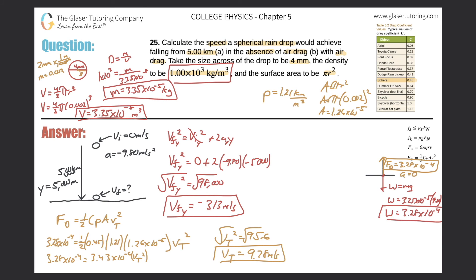Going back to the question — the raindrop won't exceed 9.78 m/s. Compare that to part (a): without air resistance the velocity would be 313 m/s, nearly a thousand kilometers per hour — nobody would go outside in a rainstorm. Fortunately, air drag makes the real answer much more reasonable. Thanks for tuning in and please remember to subscribe.